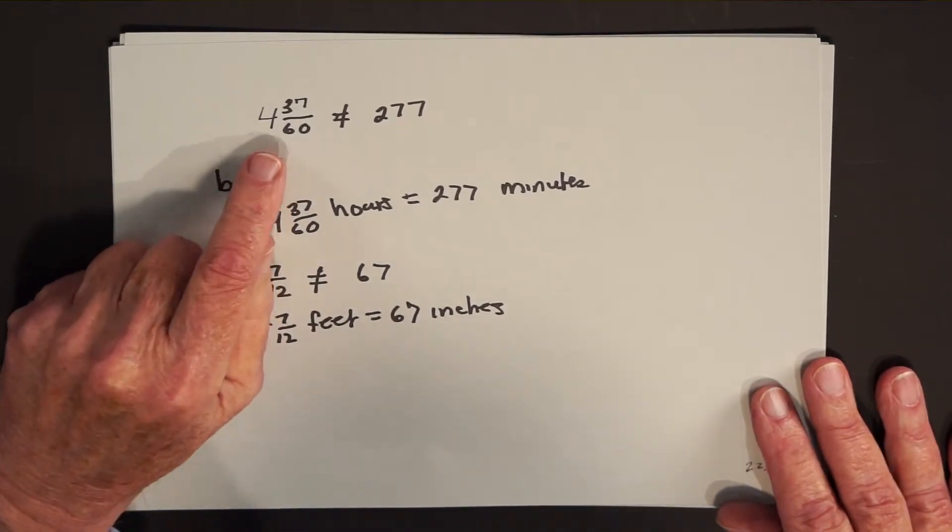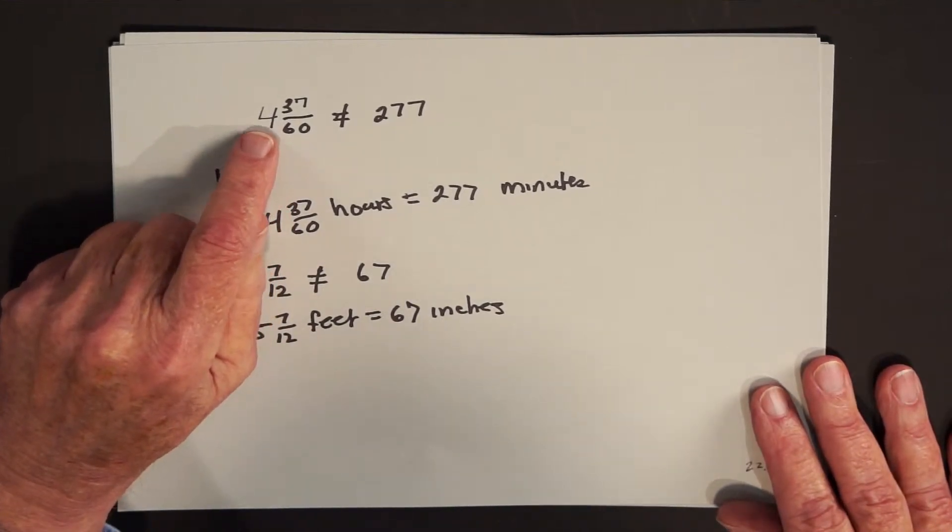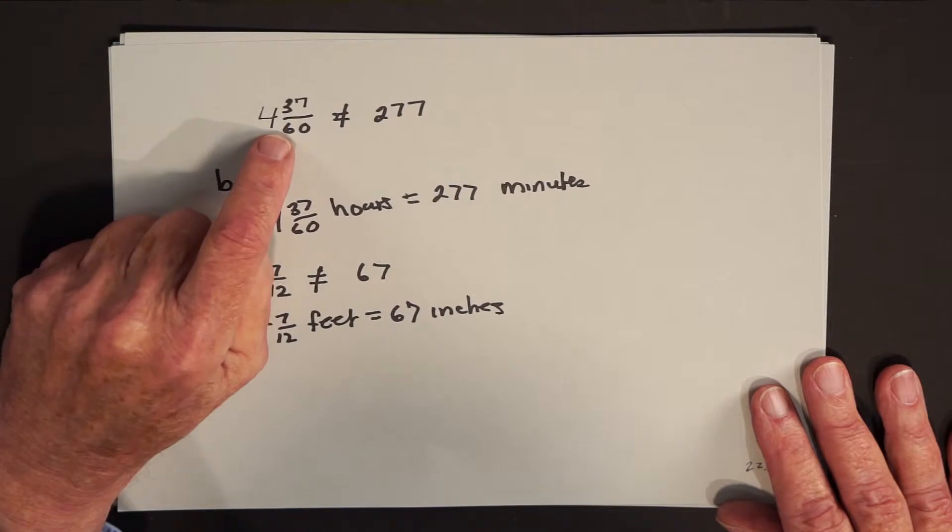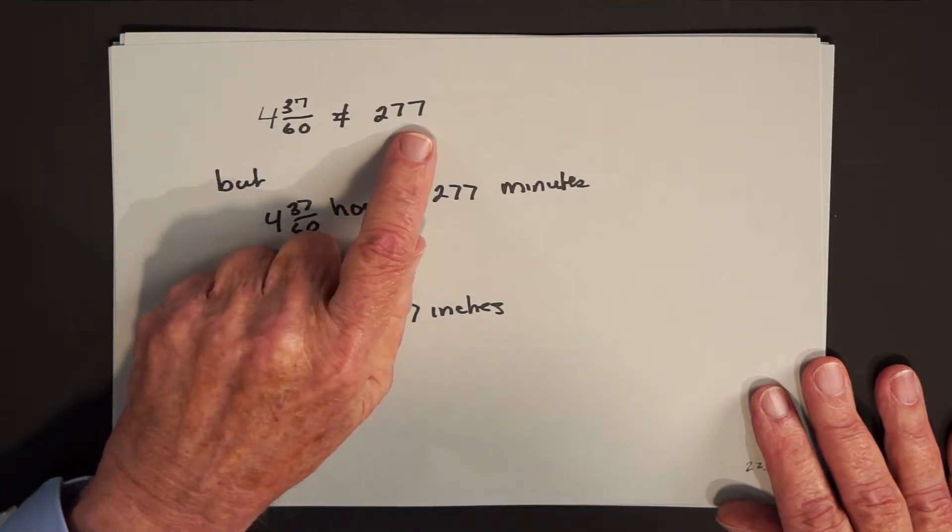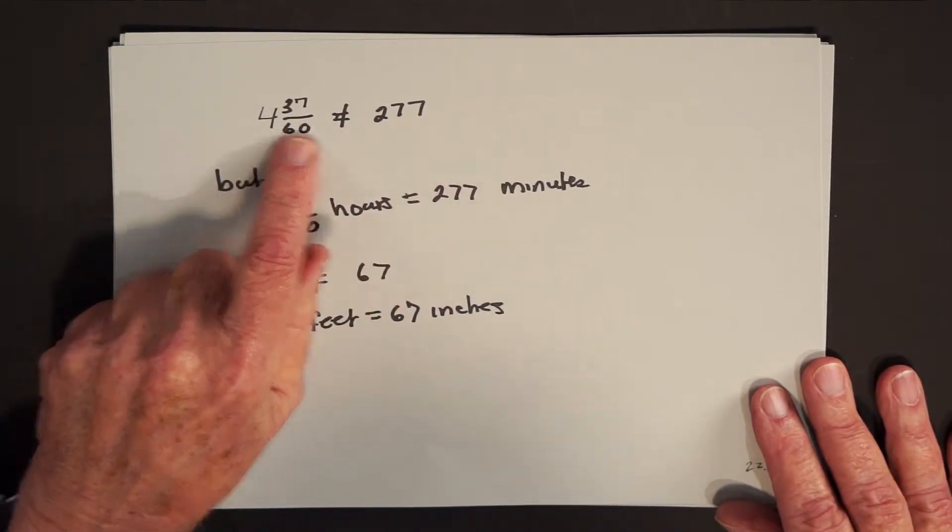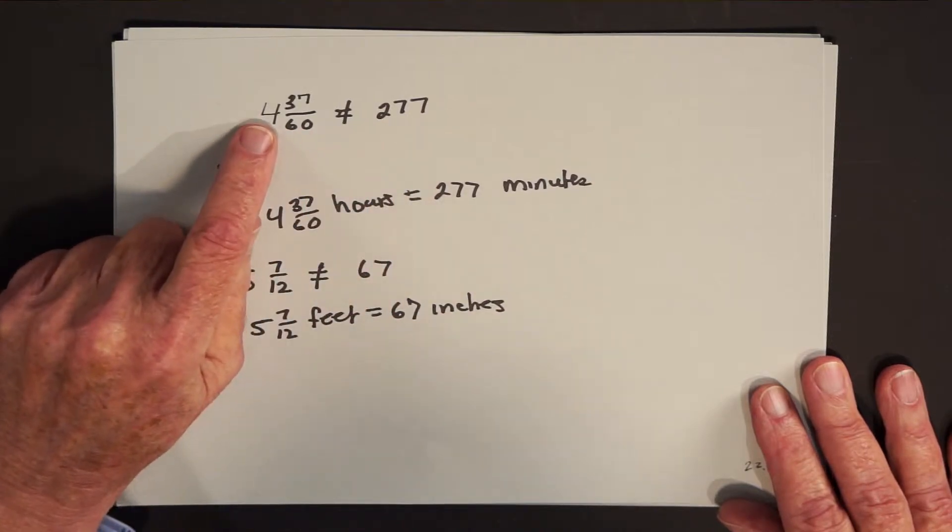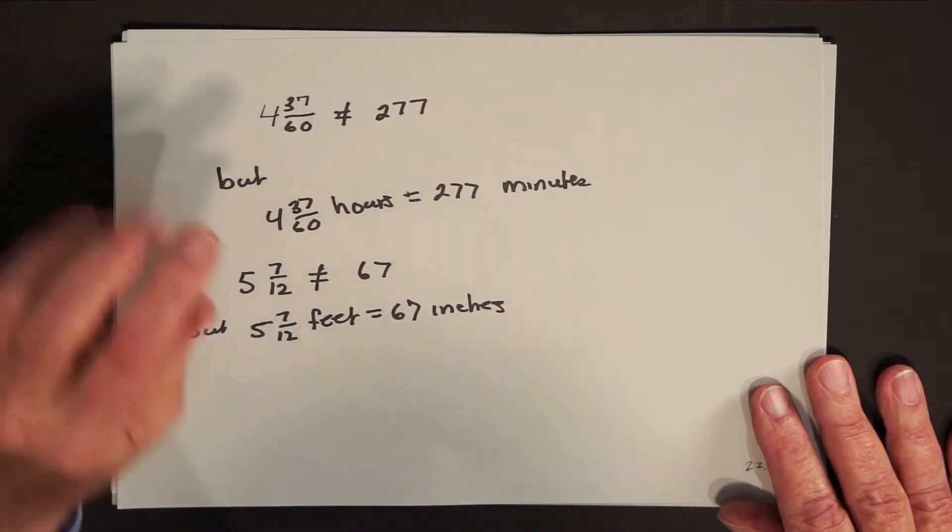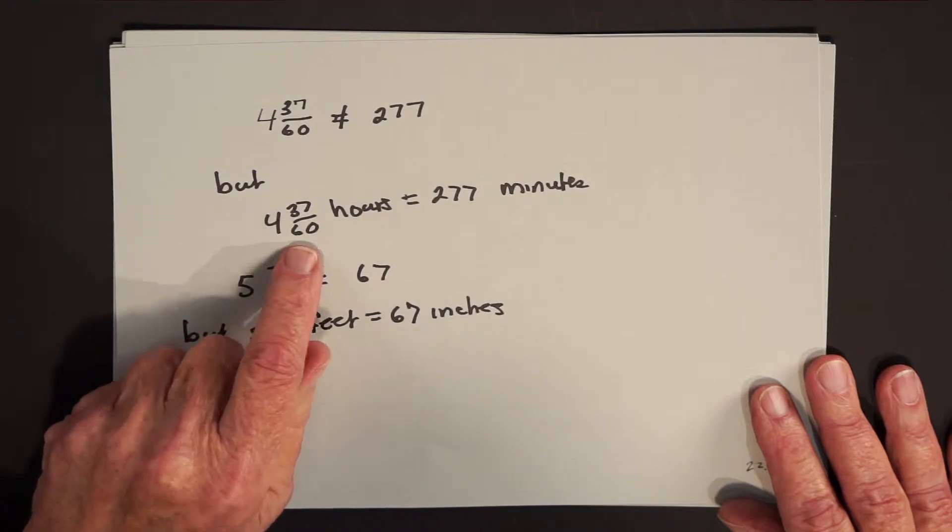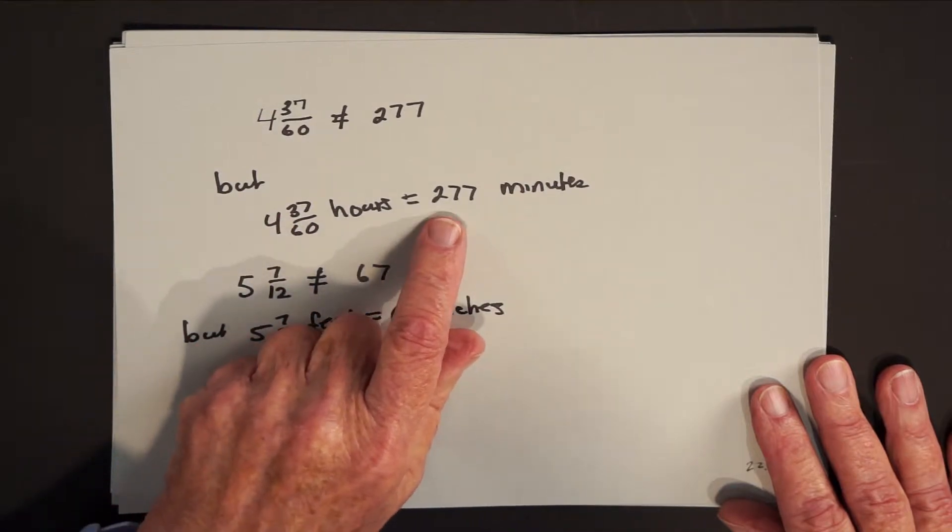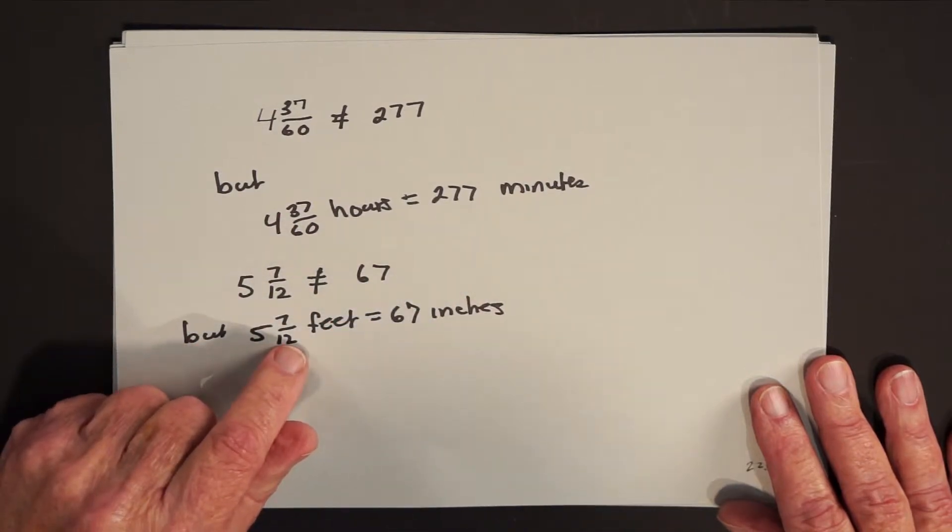But be careful, as adjectives, 4 and 37 sixtieths and 277 are not the same. 277 is much more than 4 plus a fractional part. But 4 and 37 sixtieths hours is the same as 277 minutes.